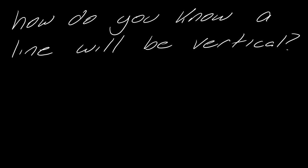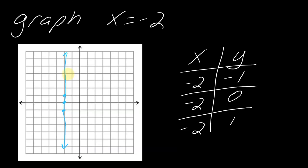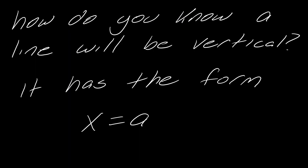And how do you know if a line will be vertical? So again, just going back and reviewing this here. So notice this was x equals 2 and it gave us a vertical line. So for a vertical line, you just have to have this form x equals a, where a again can be like any number that you want.